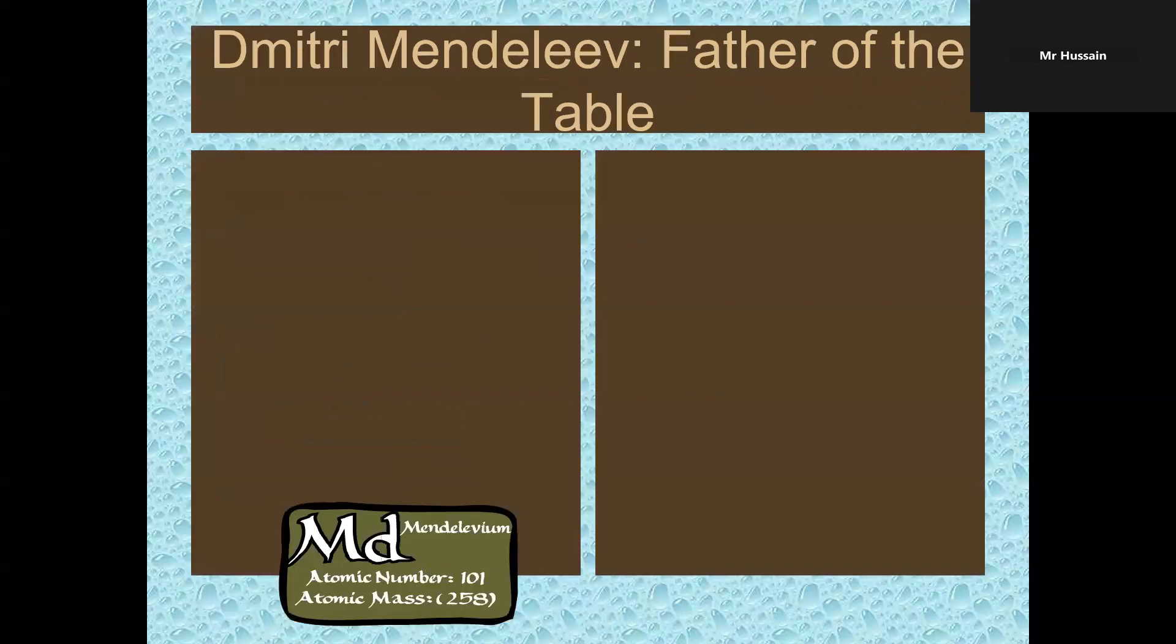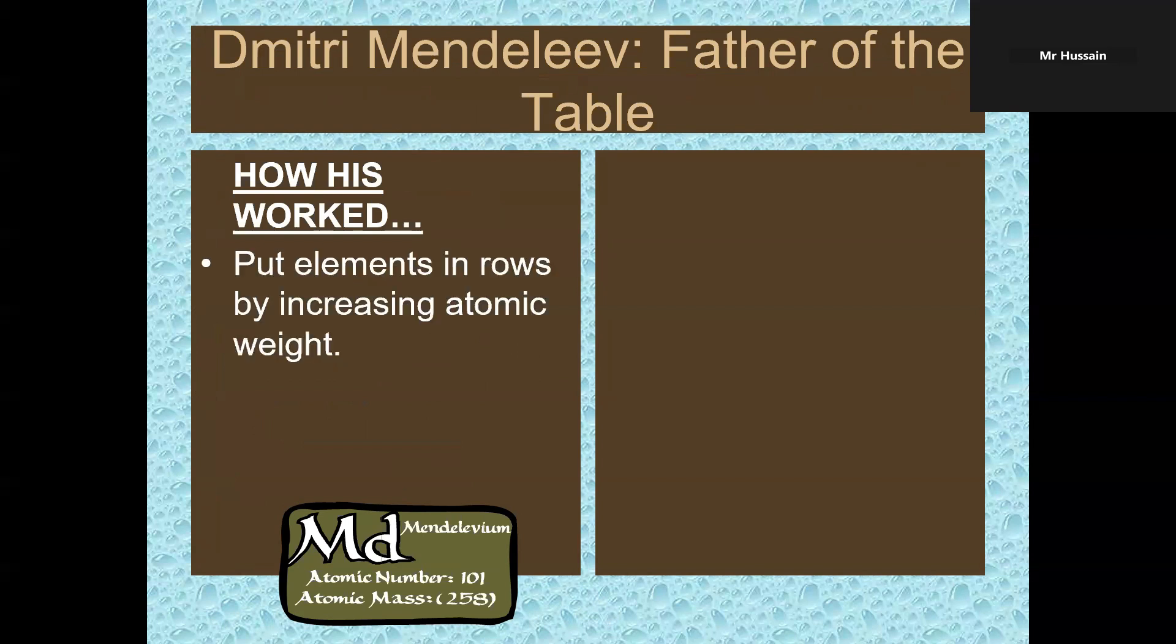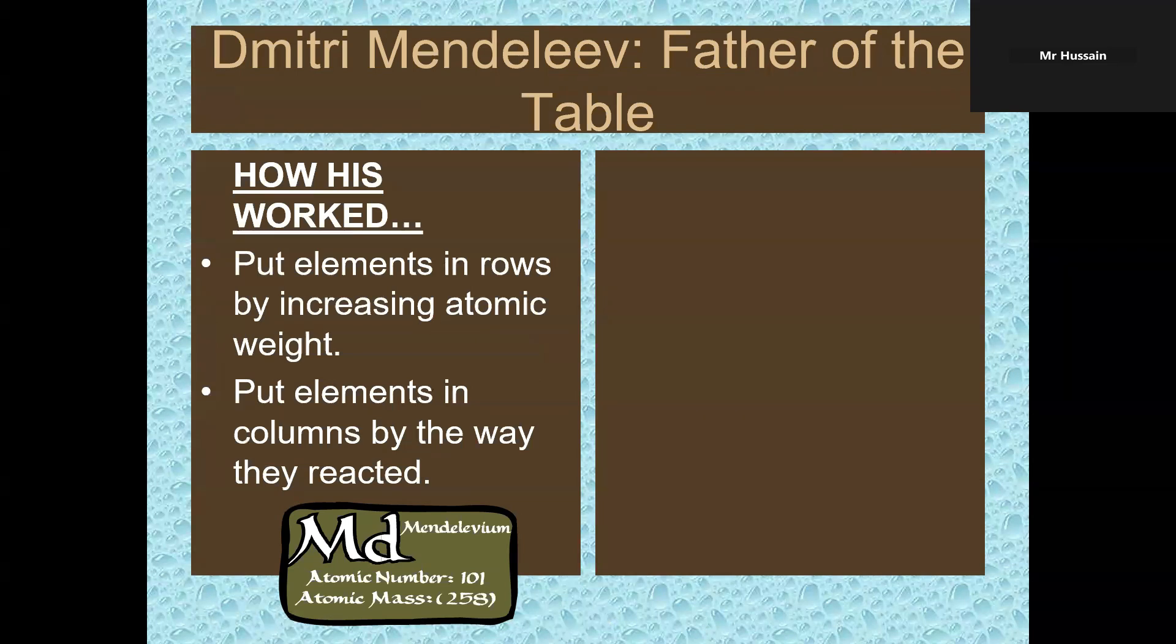Dmitry Mendeleev, you can call him the father of the table. How Mendeleev worked: he put all elements in rows by increasing atomic weight and put elements in columns by the way they reacted.